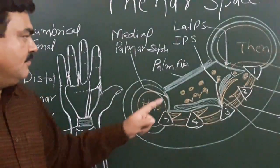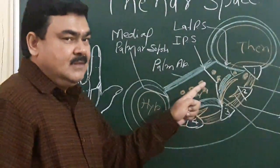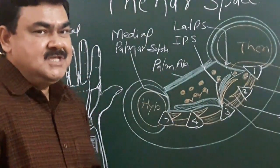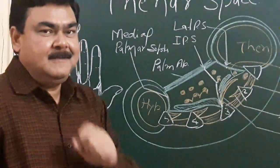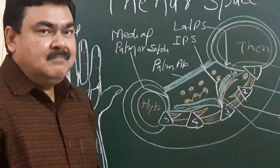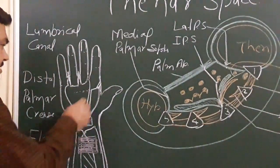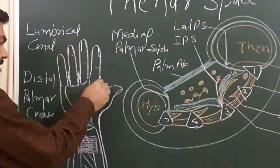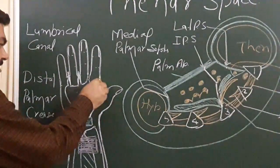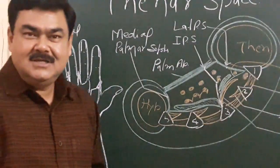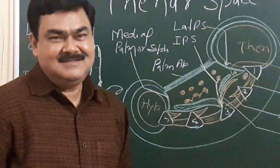So, these are boundaries of this thenar space. If this space is infected, then pus can be drained by making incision over the first web space, and posterior aspect, here. So, this is all about the thenar space. Thank you.